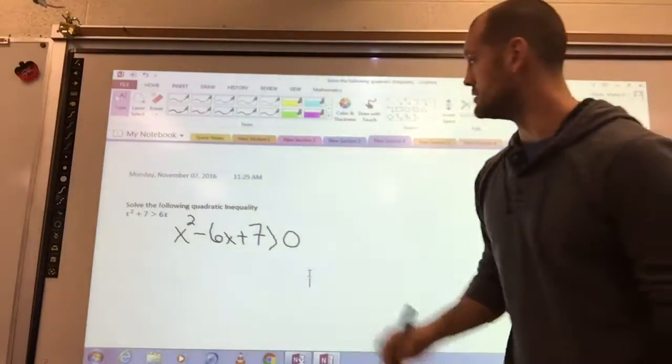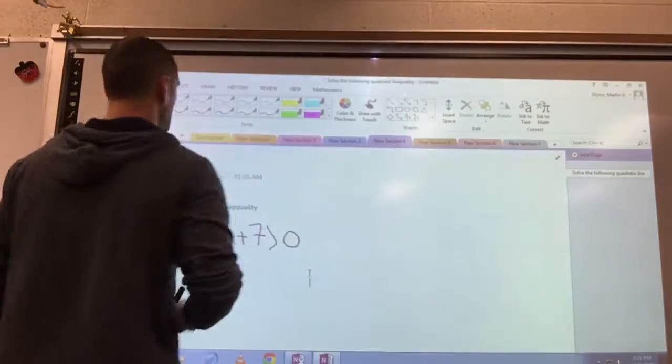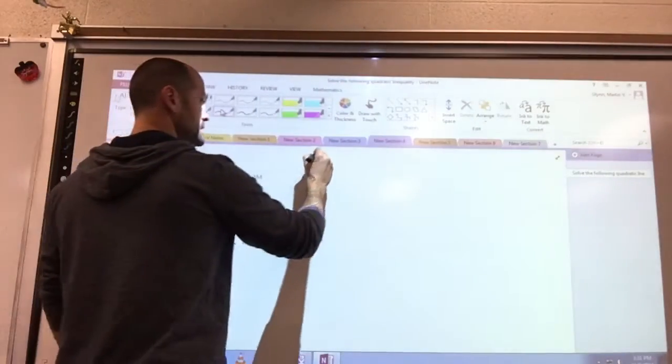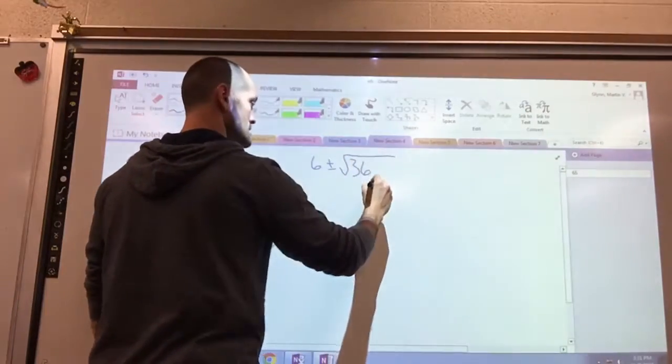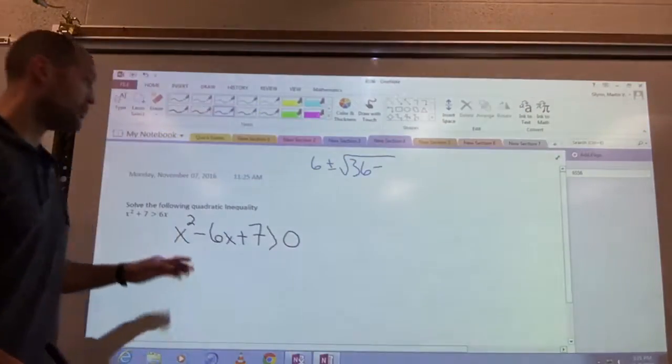I get negative b plus or minus the square root of b squared, which is 36, minus 4ac, which gives us 28, all over 2a, which is just 2.